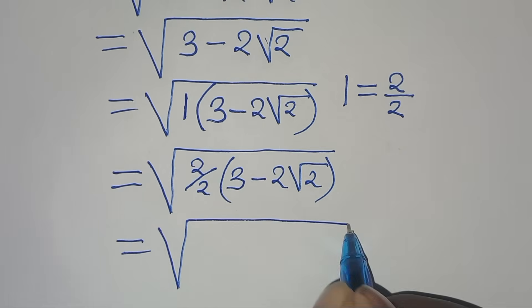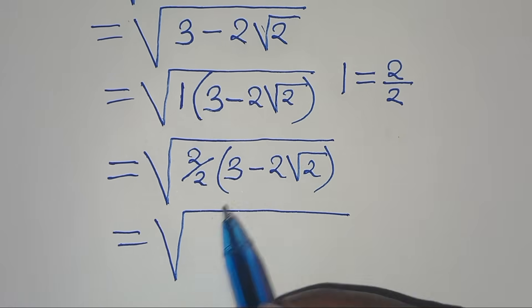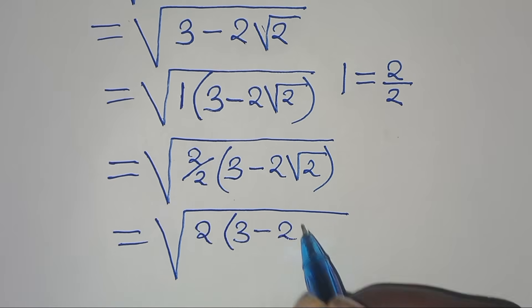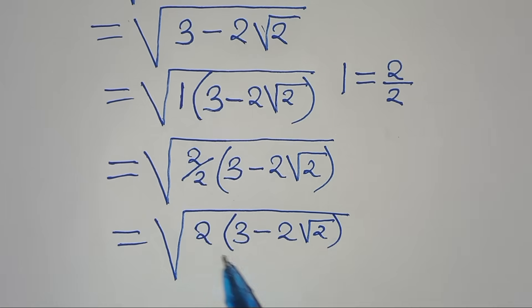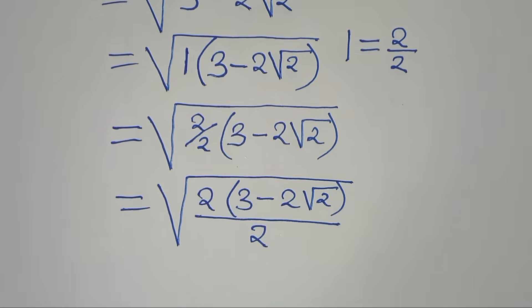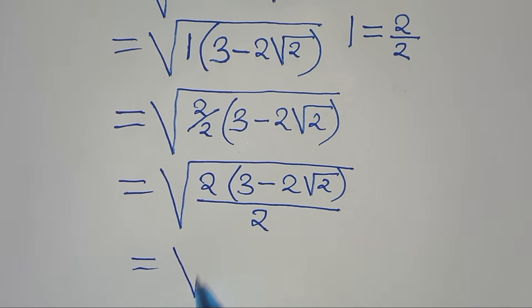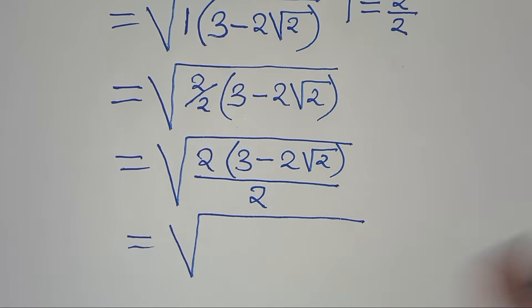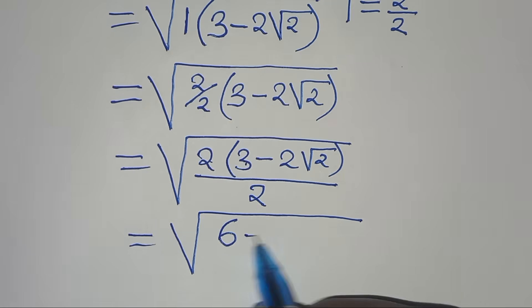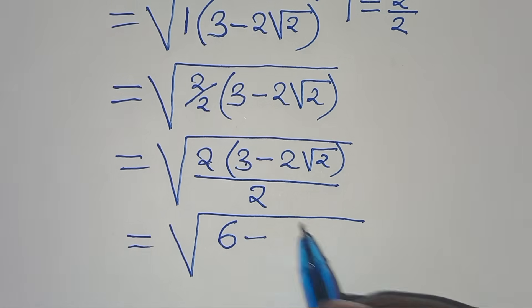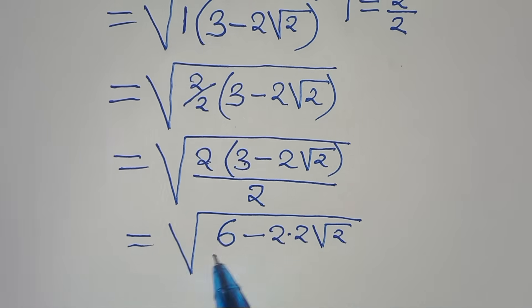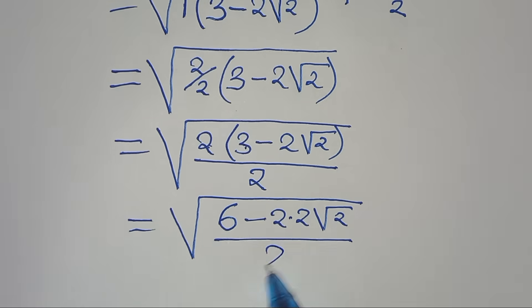Now let's multiply here, so we have 2 multiplied by 3 minus 2 square root of 2, everything divided by 2. So we have the square root of 2 — this is 3 times 2, which is equal to 6 — then subtract 2 times 2 square root of 2, everything divided by 2.